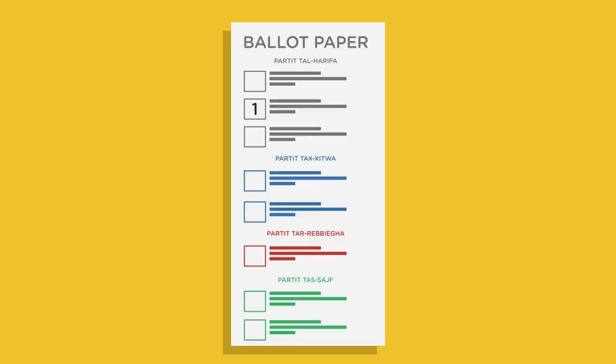Place a 1 next to the candidate you most want to see elected. Place subsequent numbers 2, 3, 4, 5 and so on next to any other candidates you would like to see elected. You can mark as many different candidates and parties as there are options.